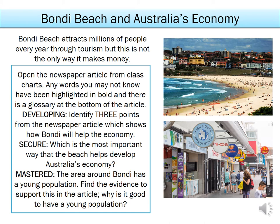On class charts there is a newspaper article about tourism and industry around Bondi Beach. Read through this article and think about the information you are being given. Any words you might be confused about are highlighted in bold text with a glossary at the bottom of the article. If there are any extra ones, ask someone at home or use the internet. Working at grades 3 and 4, read the article and pick three points that show how Bondi might help the economy — for example, the exact number of tourists or businesses that have opened.